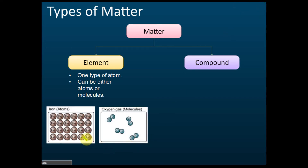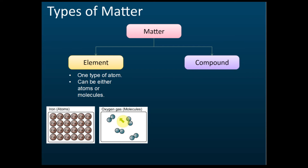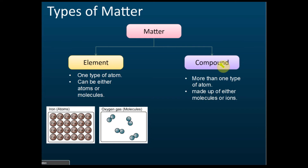For example, iron — we have only one type of atom, just iron atoms, so this is an element. Now if two oxygens combine together, it's called a molecule. Two or more atoms combine to form a molecule, but there is only one type of atom — just oxygen — so therefore it's still an element. As long as there is only one type of atom, it is an element.